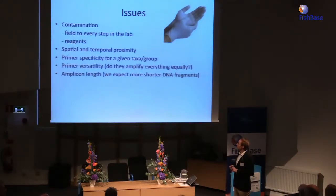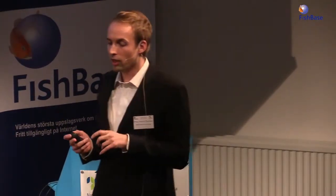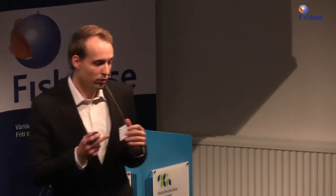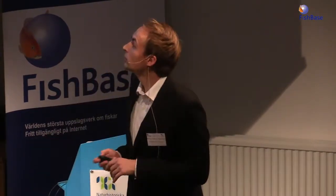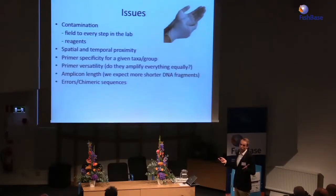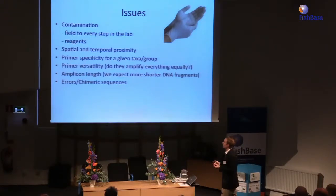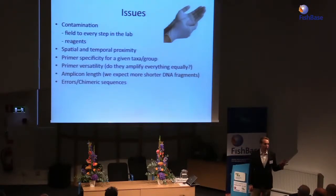The amplicon length is also an issue. We expect shorter sequences in environmental samples due to degradation, which puts a limit on how fine a taxonomic resolution or how precise an identification you can make. You cannot always go to species level — sometimes you need to work at higher taxonomic levels. That will be solved if we can target longer sequences. And there's a big problem with errors and chimeric sequences being produced during the sequencing process, which can give rise to falsely high diversity estimates if not trimmed.